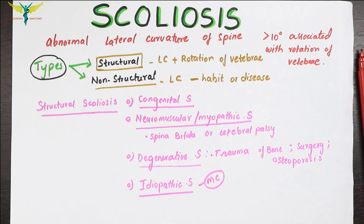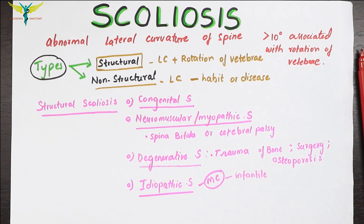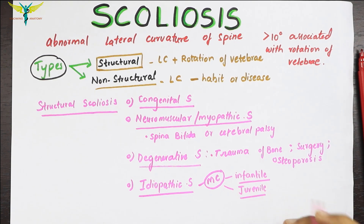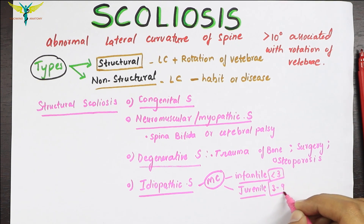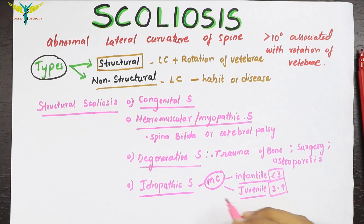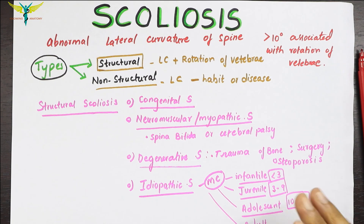Within idiopathic scoliosis there are four subtypes. The infantile type affects children from birth up to below three years of age. The juvenile type occurs at pre-puberty age, from three to nine years. The adolescent stage occurs during puberty, from 10 to 18 years of age. The adult stage occurs after skeletal maturity, that is, after 18 years of age.